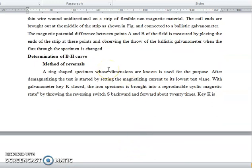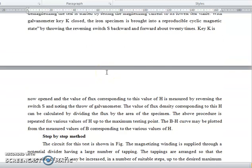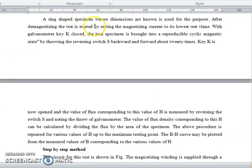Determination of BH Curve - Method of Reversals: A ring-shaped specimen whose dimensions are known is used for this purpose. After demagnetizing, the test is started by setting the magnetizing current to a low test value with the galvanometer key K closed. The iron specimen is brought to a reproducible cyclic magnetic state by throwing the reversing switch S back and forward about 20 times.